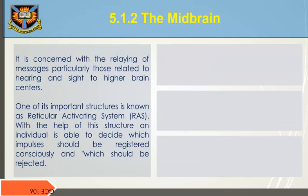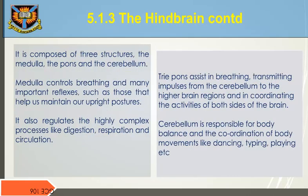The midbrain is concerned with the relaying of messages, particularly those related to hearing and sight, to higher brain centers. One of the important structures is known as the Reticular Activating System. With the help of this structure, an individual is able to decide which impulses should be registered consciously and which should be rejected.